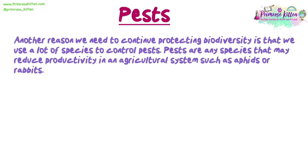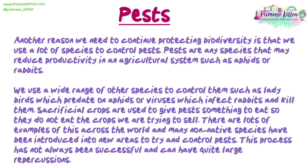Pests. Another reason we need to continue protecting biodiversity is that we use a lot of species to control pests. Pests are any species that may reduce productivity in an agricultural system, such as aphids or rabbits. We use a wide range of other species to control them, such as ladybirds which predate on aphids, or viruses which infect rabbits and kill them. Sacrificial crops are used to give pests something to eat so they do not eat the crops we are trying to sell. Many non-native species have been introduced into new areas to try and control pests, though this process has not always been successful and can have quite large repercussions.